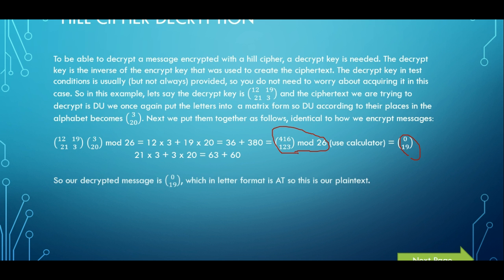And that is it, that is our decrypt message. We convert that back into letters so our plaintext message is AT. Just like that you decrypt the message. As just mentioned, the hardest part of the decryption is actually obtaining the inverse key, but that is a very complicated method where we may go through at a future point. But this video is just about decrypting it if you already have the decrypt key.